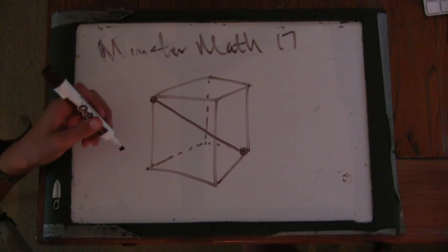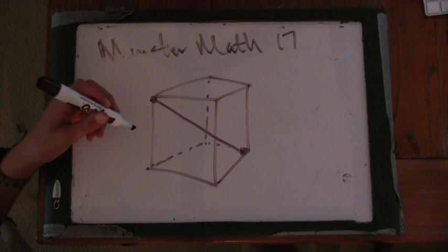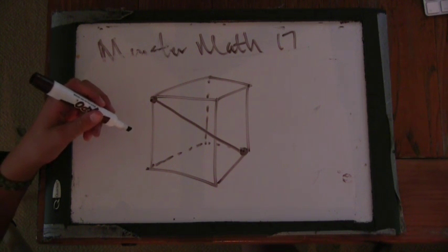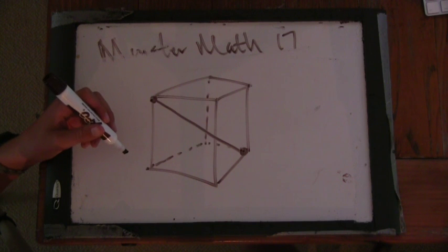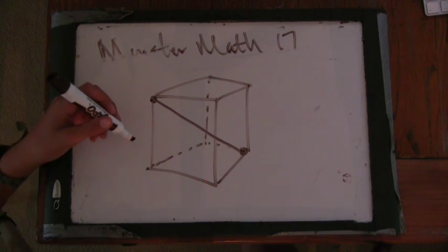It's the longest distance you can make inside of a cube. Okay, good. So it goes from one corner to the farthest corner away. And we know that's 6.